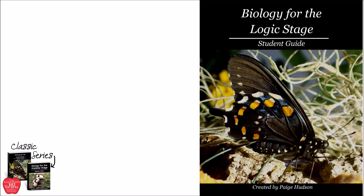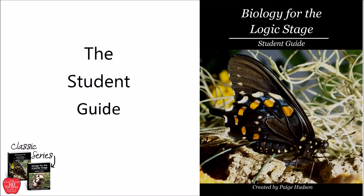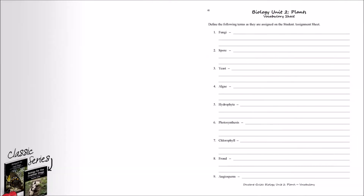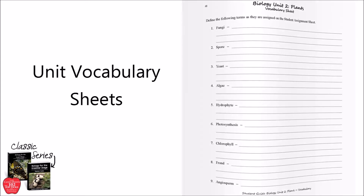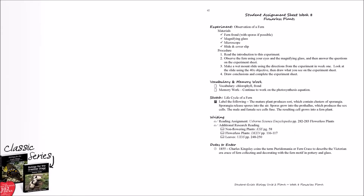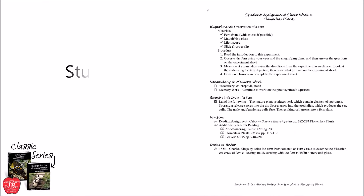Now let's take a look at the student guide, which begins with the table of contents for easy reference. After that comes the unit information, which begins with the unit vocabulary sheets. The students will be assigned these terms throughout the unit and the glossary can be found at the rear of their guide for their convenience. This is followed by the weekly lessons from the unit.